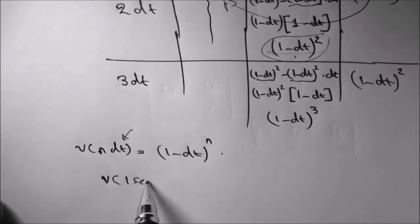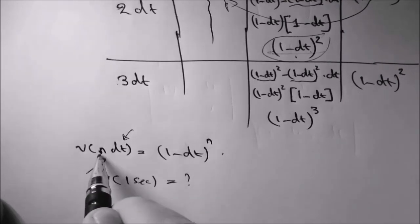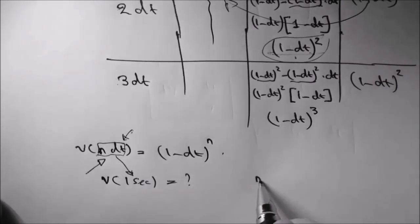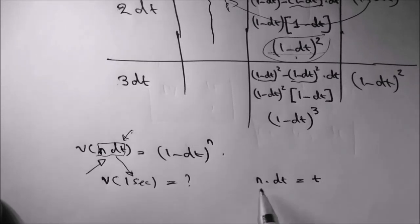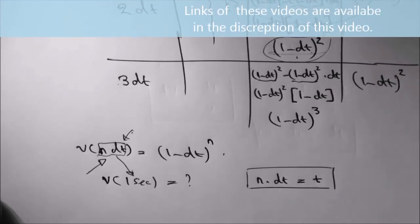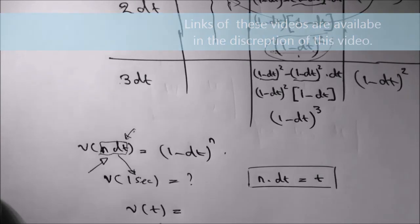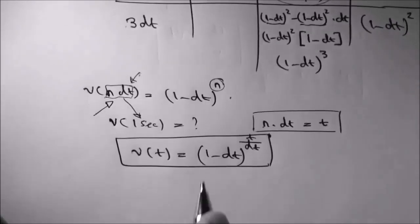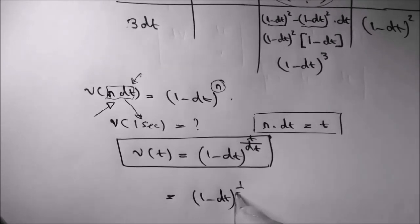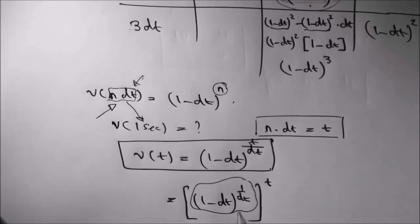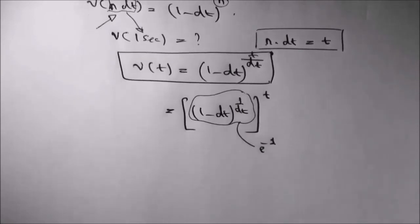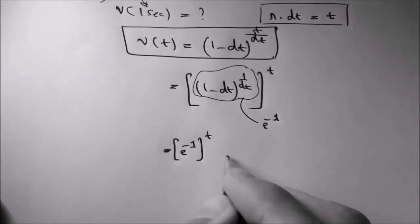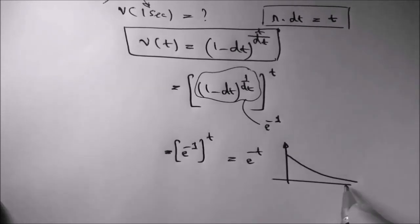So you can calculate the voltage at any dt moment. But what about V of 1 second? n should be very large so that the product n times dt equals 1, since dt is a very very small number. What I'm going to do is replace n times dt by a continuous variable t. So V(t) equals (1 minus dt) to the power n. I'm going to replace n by t over dt. So we have (1 minus dt) to the power (1/dt), all raised to t. This quantity equals e to the minus 1, so we have e to the minus 1 raised to the power t, which equals e to the minus t. So this is the discharge equation of a capacitor.